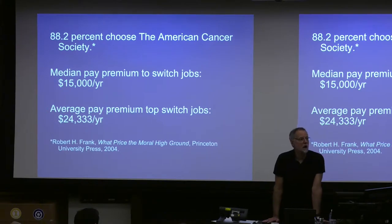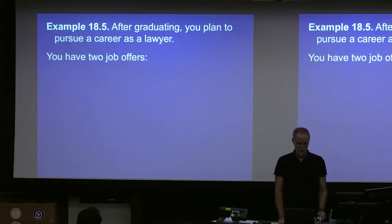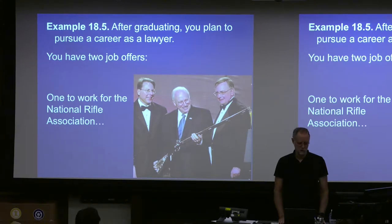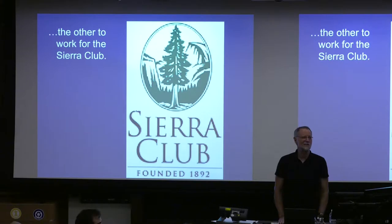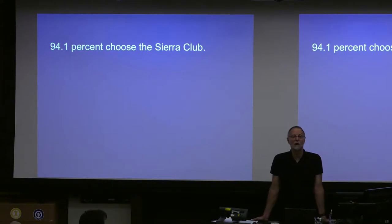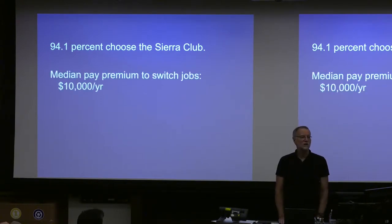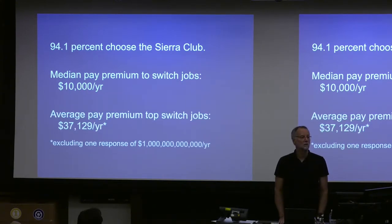Maybe that's an odd pair of jobs. Let's look at another pair. After graduating, you're going to pursue a career as a lawyer. You have two job offers: one is to be a lawyer for the National Rifle Association, and the other is to be a lawyer for the Sierra Club, an environmental organization. 94% of respondents chose the Sierra Club. The median pay premium for switching was $10,000, though the average pay premium was considerably bigger with a lot more spread.